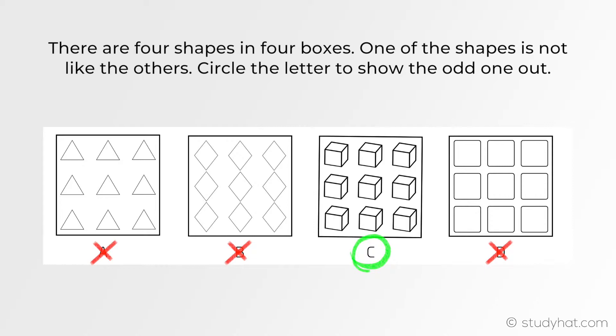Just a quick recap. We spotted the obvious links which was each figure had nine shapes within it, and also then by applying SPANSS we recognized that C is different to the others as it is a 3D shape.